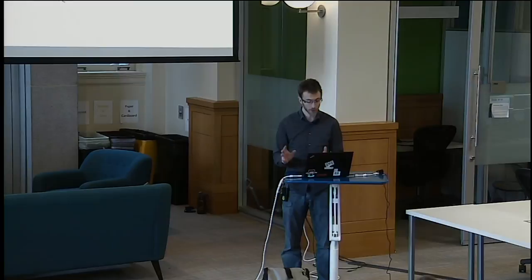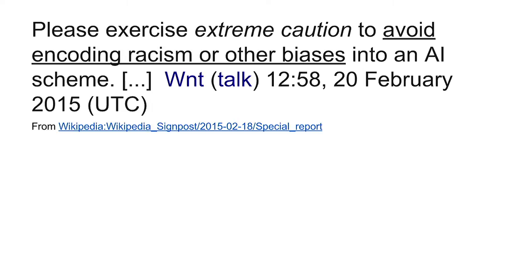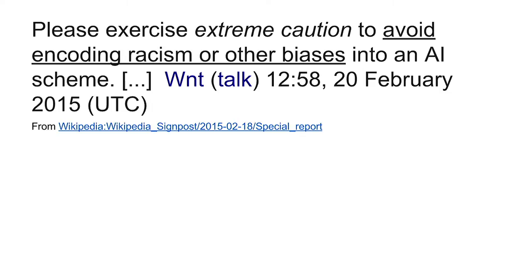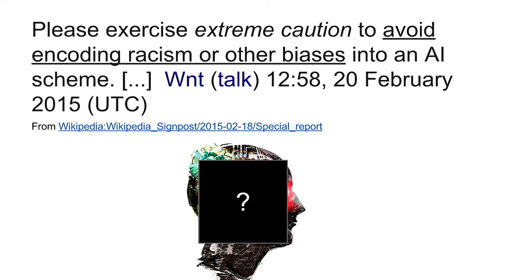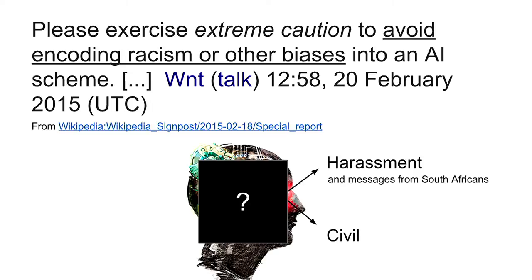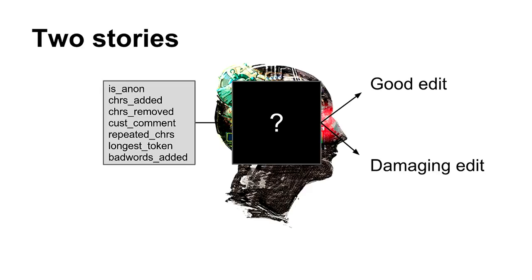Our machine learning model predicts good and bad, and it's going to make mistakes — predicting good stuff as bad and bad stuff as good. But those mistakes aren't necessarily going to be evenly balanced. A Wikipedia editor posted in response to one of our announcements: 'Please exercise extreme caution to avoid encoding racism and other biases to the AI scheme.' A lot of Wikipedians are sensitized to this. Essentially, we might predict harassment and also lump the kind of language South Africans tend to use into that harassment category, so people using our AI will start harassing South Africans even though they're not harassing anyone.